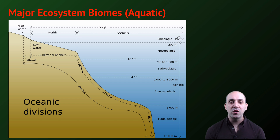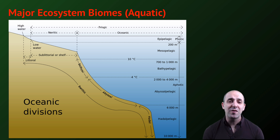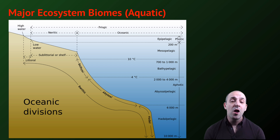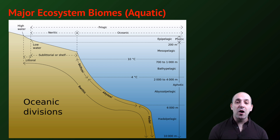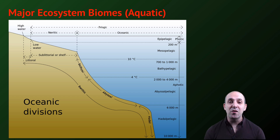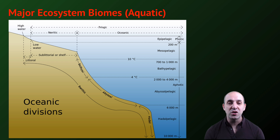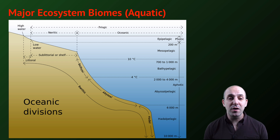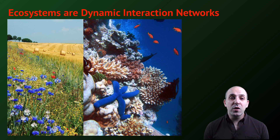Aquatic biomes are determined similarly to terrestrial biomes in terms of latitude having an effect on sunlight and producer activity, but they're also determined by where they are in the ocean. The amount of sunlight received at a particular depth and other major planetary conditions determine the characteristics of any particular major marine biome.